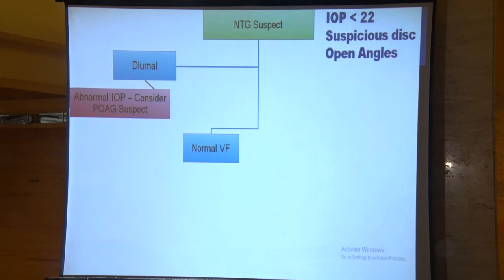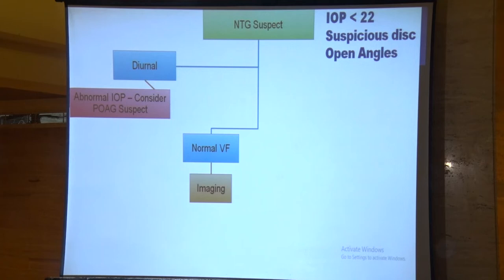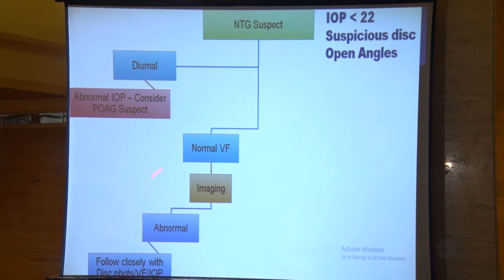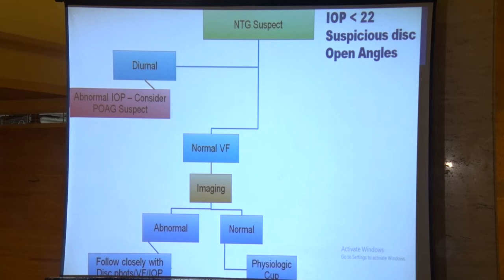In patients where diurnal fluctuation is not present, we must subject them to visual field examination. If they have a normal visual field, we can proceed to imaging. The role of imaging is limited in glaucoma diagnosis, but it has a definite role in monitoring progression. If imaging shows RNFL defects, we need to follow these patients closely with serial disc examinations, visual field examinations, and IOP monitoring.